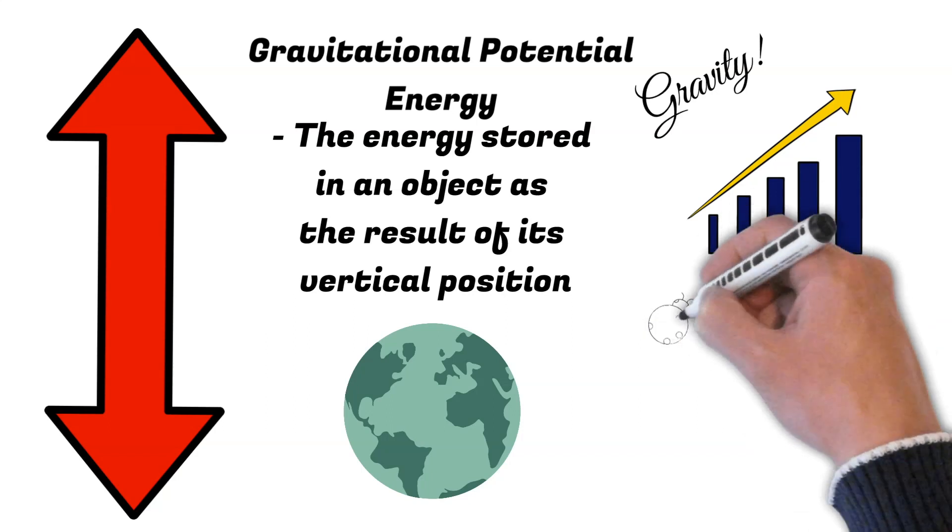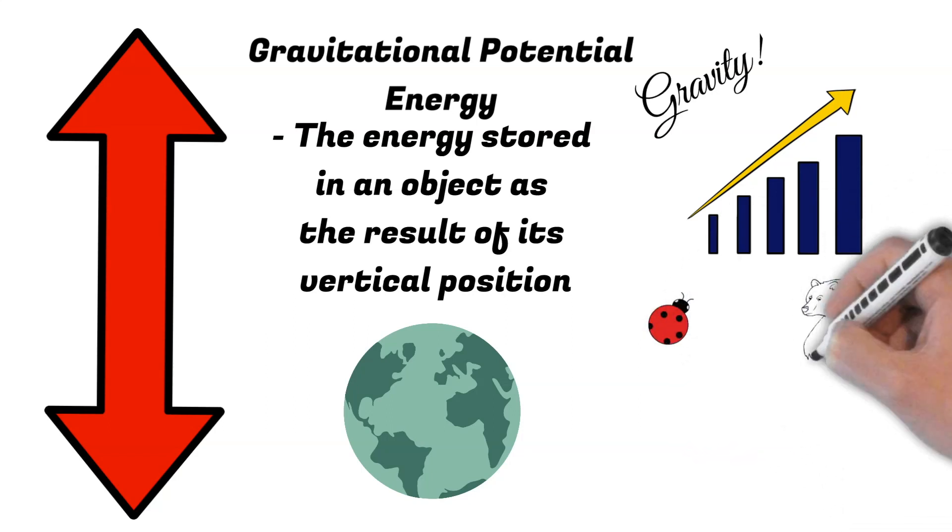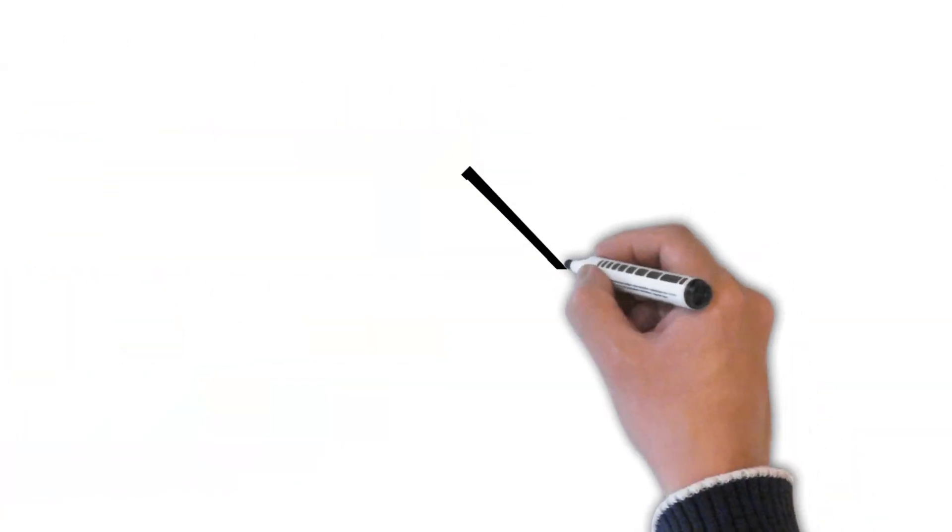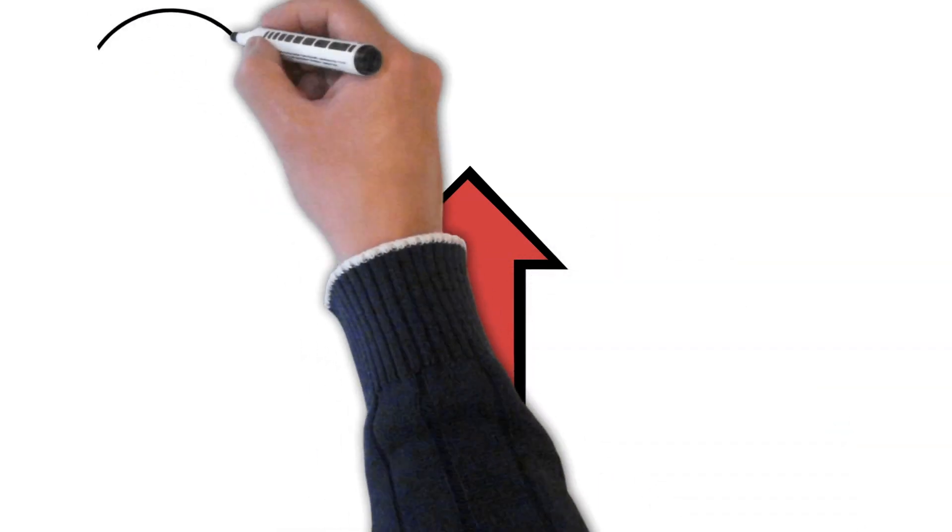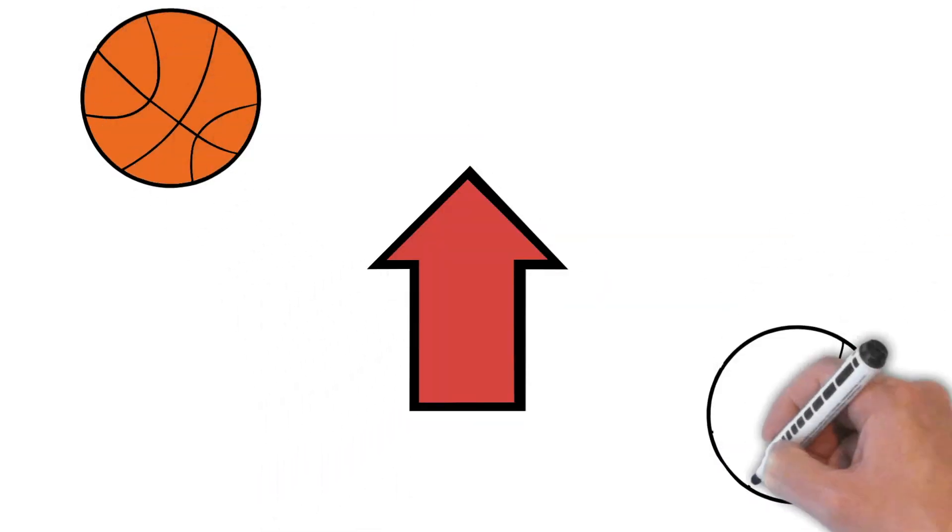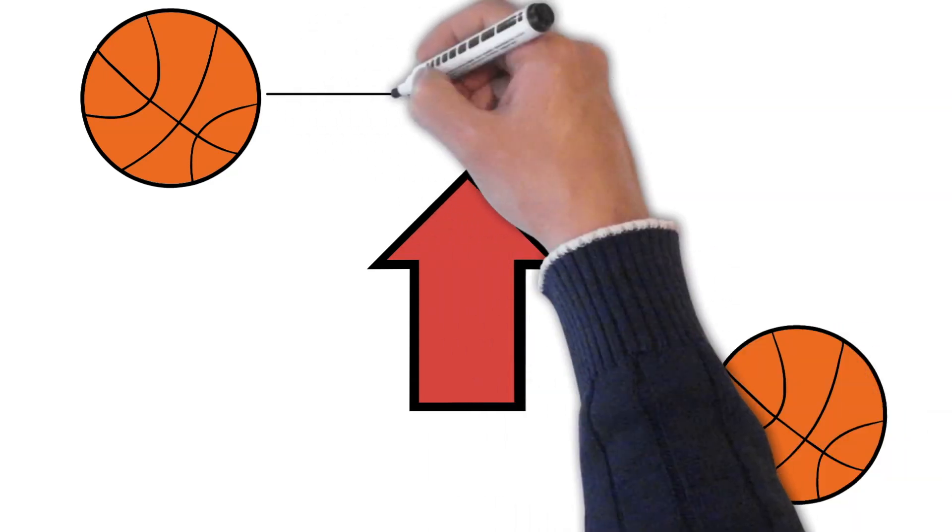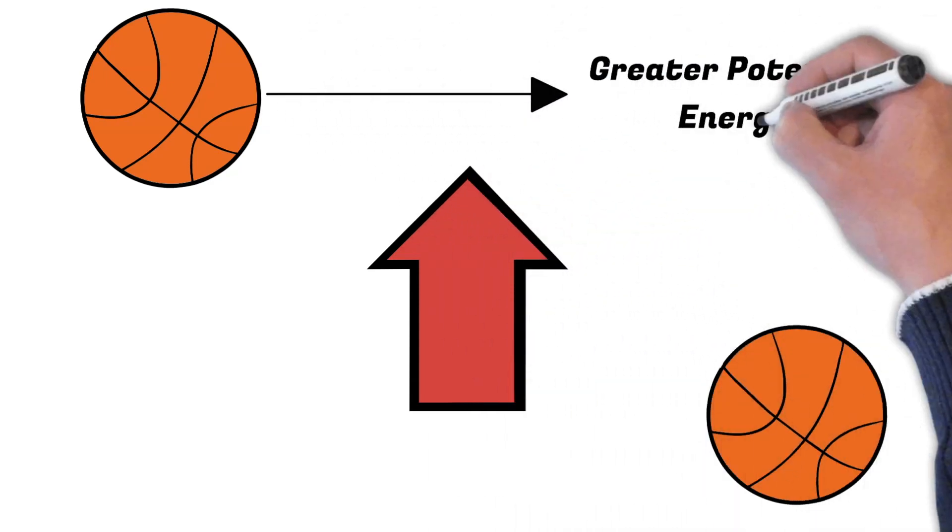More massive objects have greater gravitational potential energy as well. There is also a direct relation between gravitational potential energy and the height of an object. The higher that an object is elevated, the greater the gravitational potential energy.